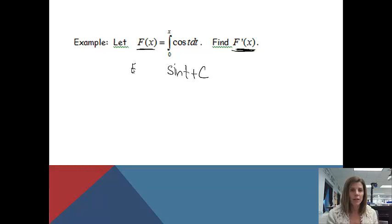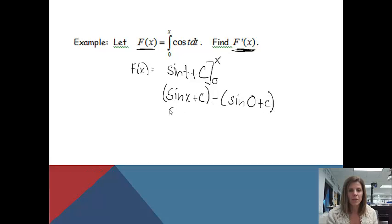So that's what F of x would equal. Notice we have to evaluate it at 0 and x. I really wouldn't need to put the plus c, but I'll just keep it in. So we're going to put x in. I'll get sine x plus c minus, if I plug 0 in, I'll get sine of 0 plus c. That gives me sine of x plus c minus 0 minus c. The c's cancel out.